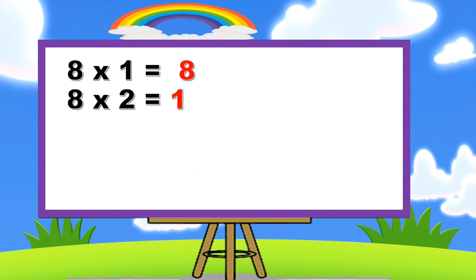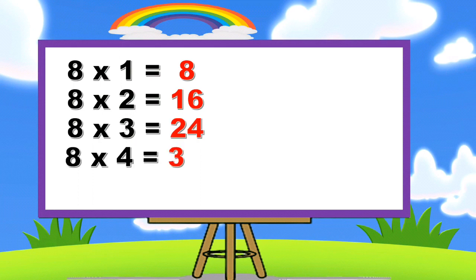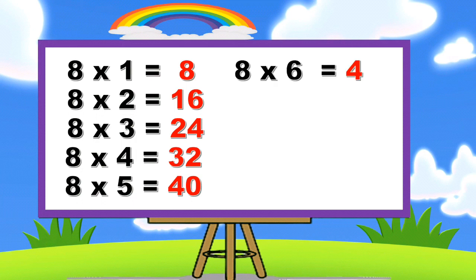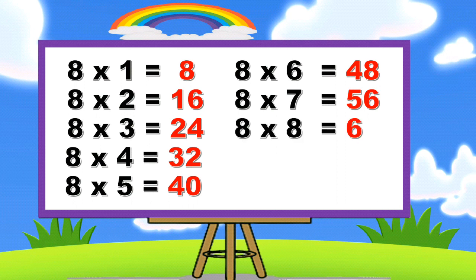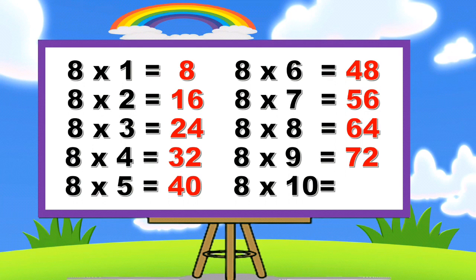8 × 1 = 8, 8 × 2 = 16, 8 × 3 = 24, 8 × 4 = 32, 8 × 5 = 40, 8 × 6 = 48, 8 × 7 = 56, 8 × 8 = 64, 8 × 9 = 72, 8 × 10 = 80.